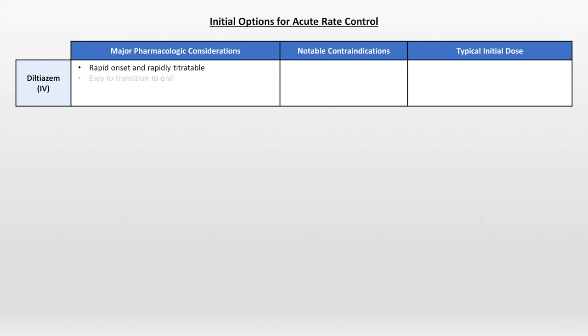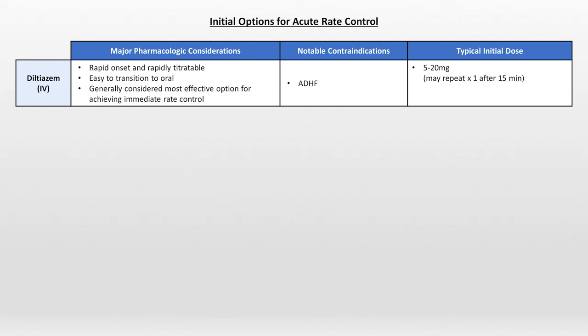If the decision is made that rate control is necessary, probably the most common option, at least in US emergency rooms, is IV diltiazem. It has a rapid onset and is rapidly titratable, easy to transition to an oral regimen, and is generally considered the most effective option for achieving immediate rate control. Since diltiazem is a negative inotrope, its major contraindication is acute decompensated heart failure. Typical initial doses range from 5 to 20 mg, which can be repeated if necessary after 15 minutes. I personally recommend no more than 10 mg for the initial dose, since it's rapidly acting and you can always give more. If the rate responds, it can be followed by a continuous infusion starting at 5 mg per hour, titratable up to a max of 15 mg per hour.